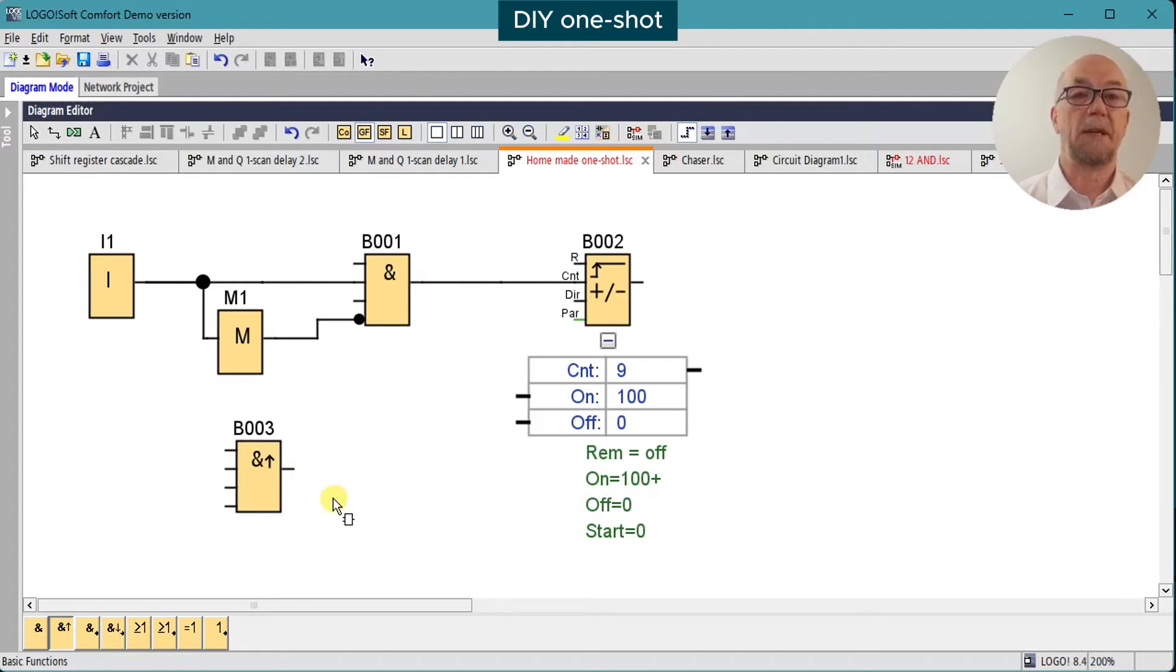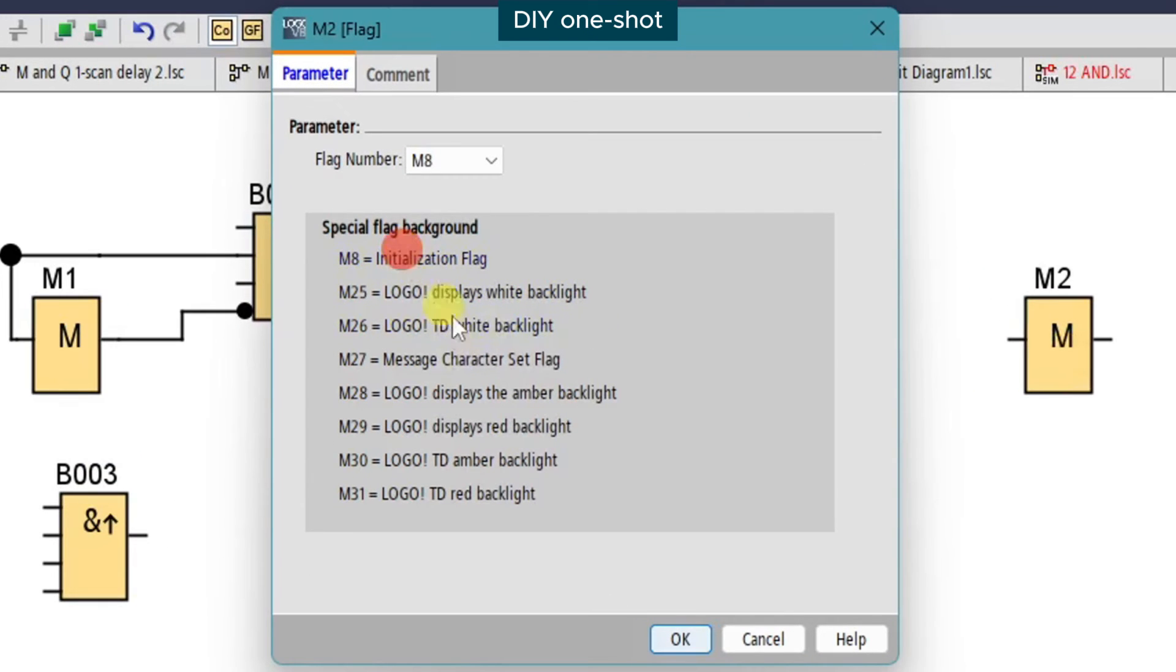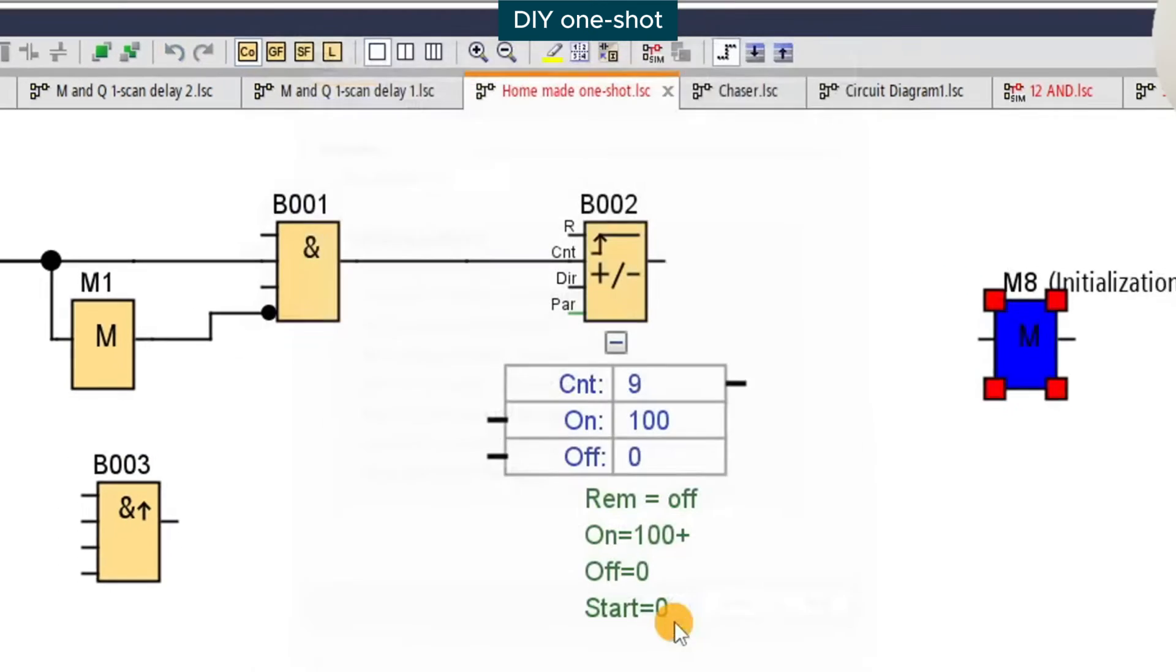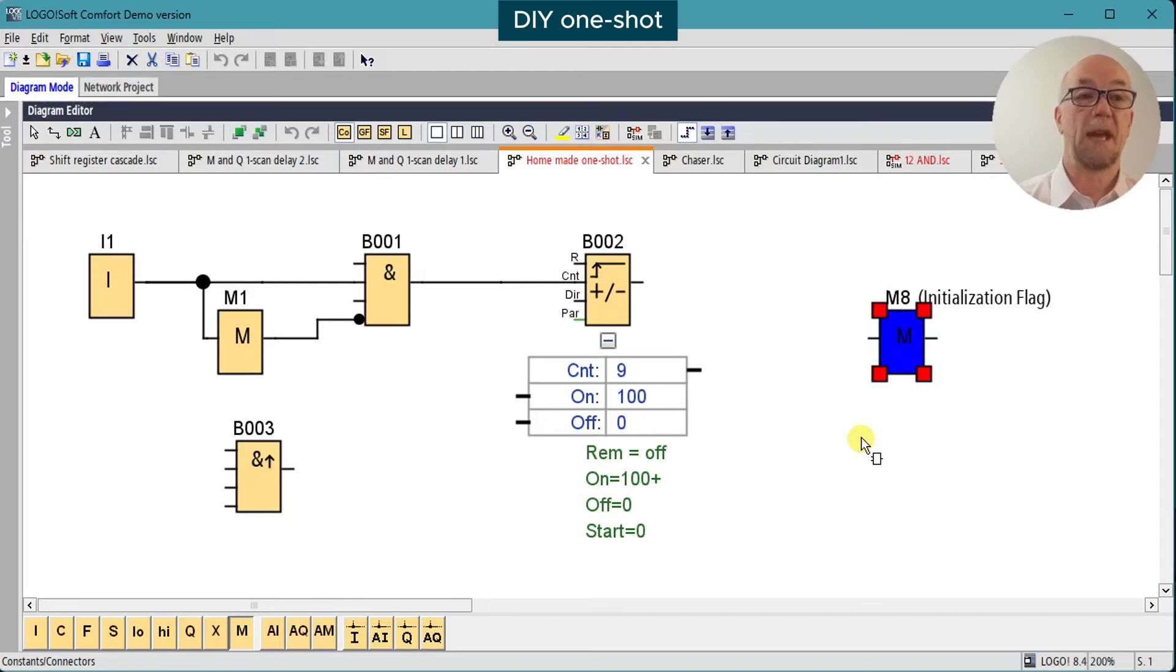Another place where it could be useful is on a first shot, single scan to reset stuff when the PLC powers up. But Siemens have already thought of that and given us the M8 initialization flag, which turns on for one scan at PLC power up, and they helpfully give it a blue background color to help identify it on our circuit diagram.